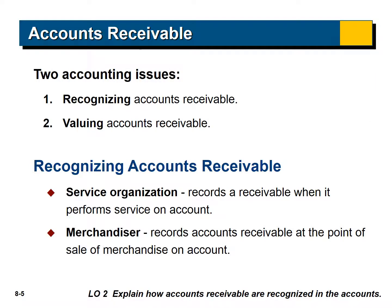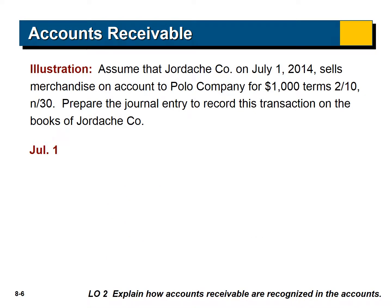There are two issues when we talk about accounts receivable: recognizing accounts receivable and valuing them. For a service organization, we record a receivable when it performs a service on account. If you're an attorney, you perform a service and send a bill to your client — that's a receivable. A merchandiser like Walmart records accounts receivable at the point of sale. Assume Jordan's company on July 1st, 2014 sells merchandise on account to Polo Company for $1,000, terms 2/10 net 30.